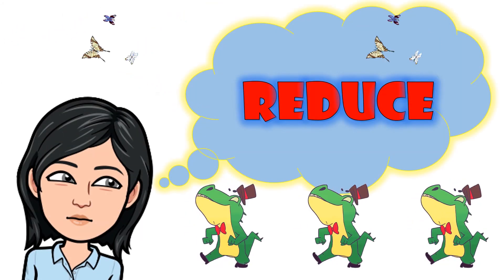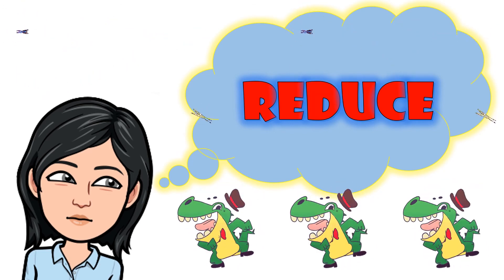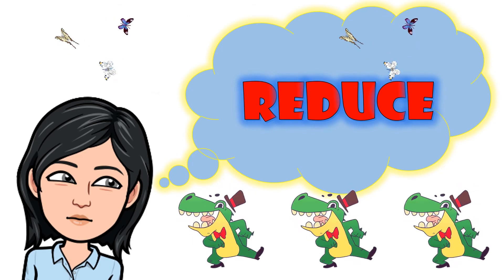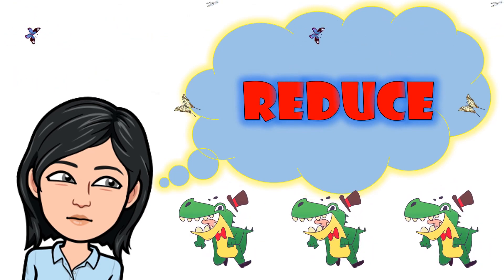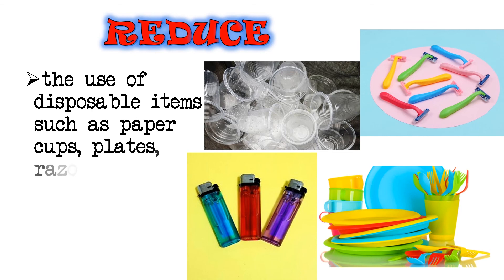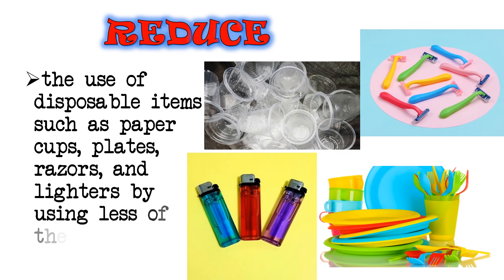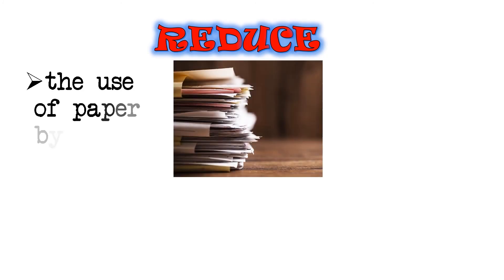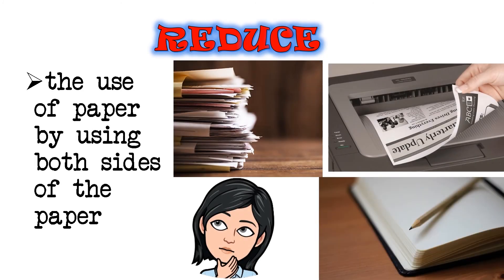If we reduce the amount of things we use, we will have fewer things to throw away. We can reduce the use of disposable items such as paper cups, plates, razors, and lighters by using less of them. We can also reduce the use of paper by using both sides of the paper.